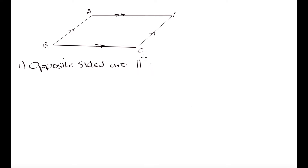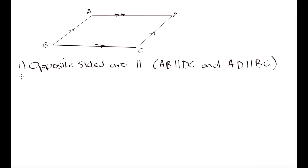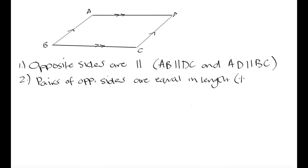Using the shorthand symbol for parallel, opposite sides are parallel means AB is parallel to DC and AD is parallel to BC. The second property of parallelograms is that pairs of opposite sides are going to have equal lengths — meaning side AD equals side BC in length, and side AB equals side DC in length.